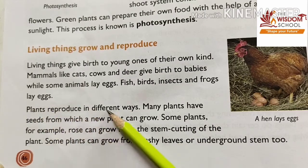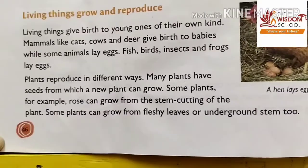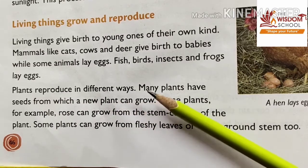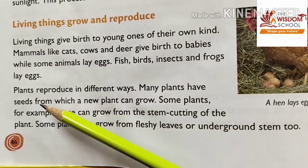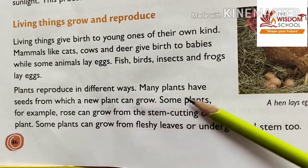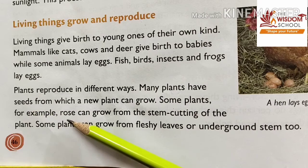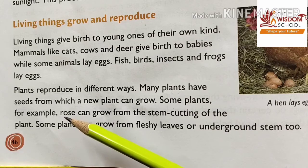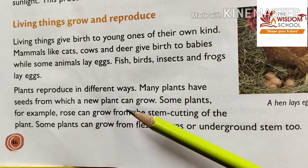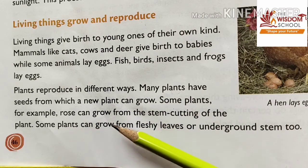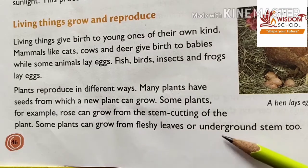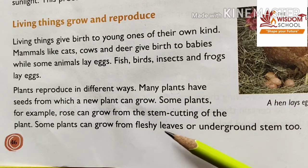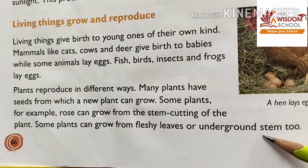Plants reproduce in a different way. Many plants have seeds from which a new plant can grow. Some plants can also grow from fleshy leaves or underground stem.